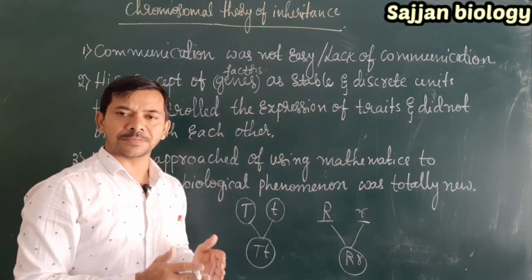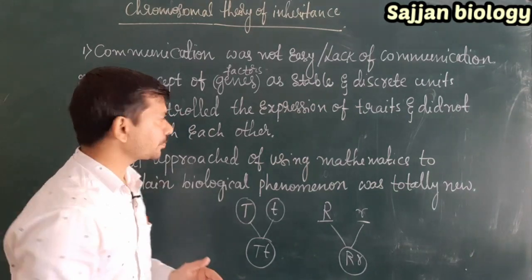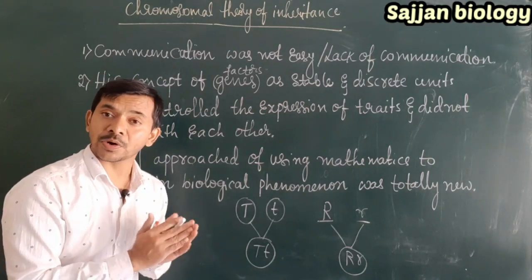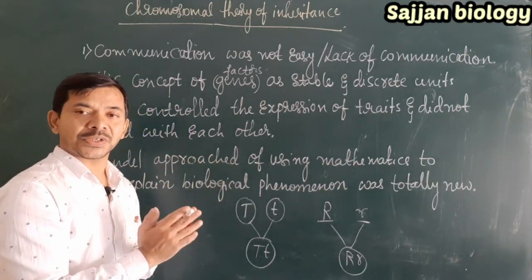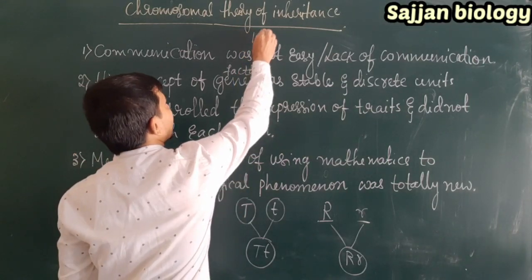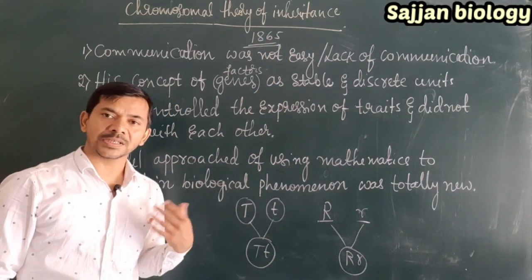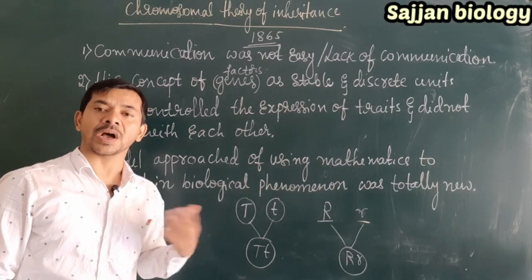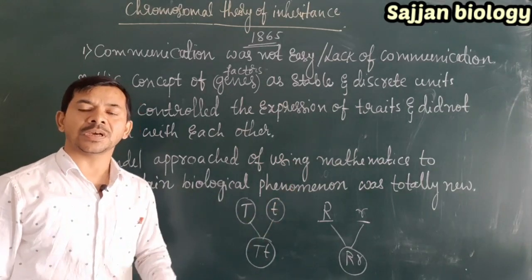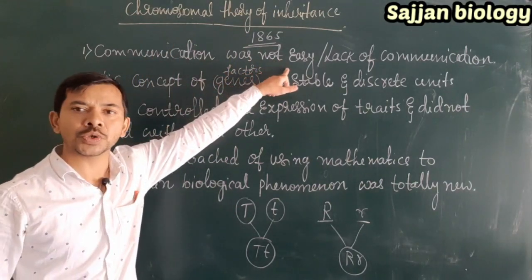Gregor John Mendel discovered the laws of inheritance. His laws were not accepted by contemporary scientists because of three major reasons. The first reason is the lack of communication — at the year of 1865, he put forth his laws, but there was no media. So the discoveries of Mendel did not reach all contemporary scientists because communication was not so easy.